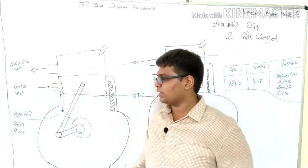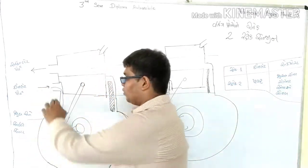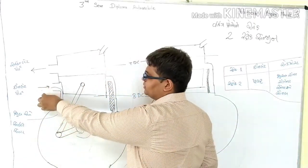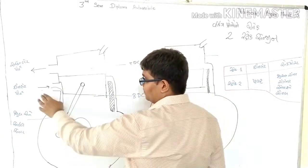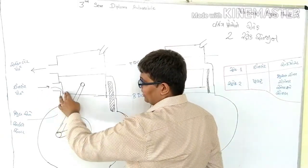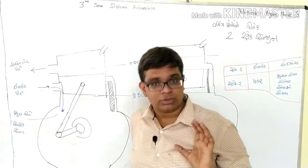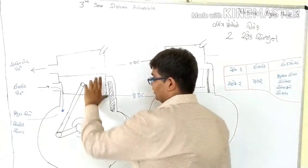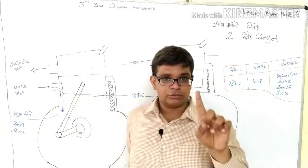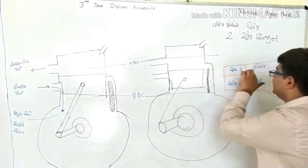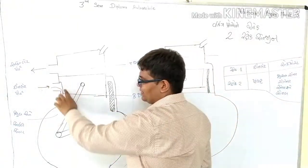In the 2-stroke engine, at the inlet port, an oil and fuel mixture is added. The oil and fuel mixture is added clearly. The piston moves up to TDC. This is the inlet stroke — the inlet mixture has been added.